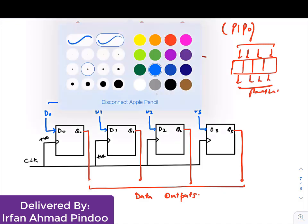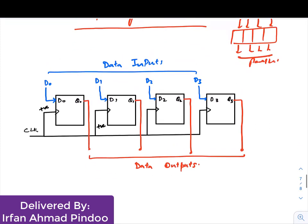To understand it properly, we have a diagram where I have taken four flip-flops. You can see the input d0, d1, d2, and d3 is given in parallel, as well as the output q0, q1, q2, and q3 is given in parallel.